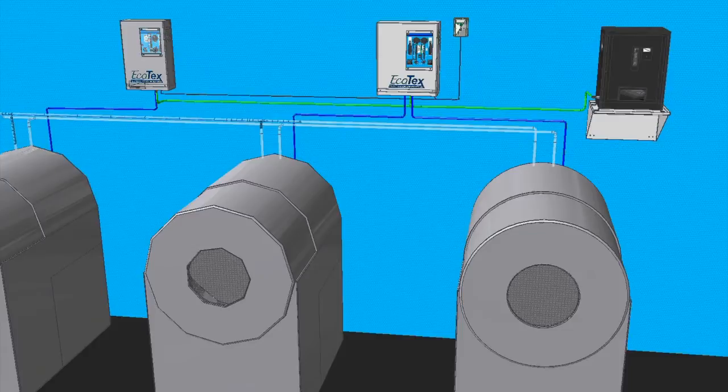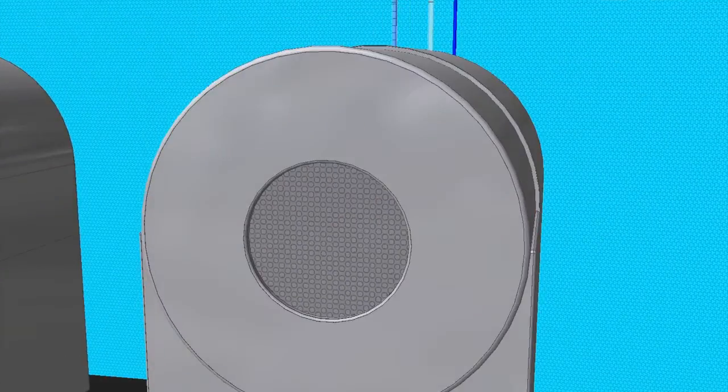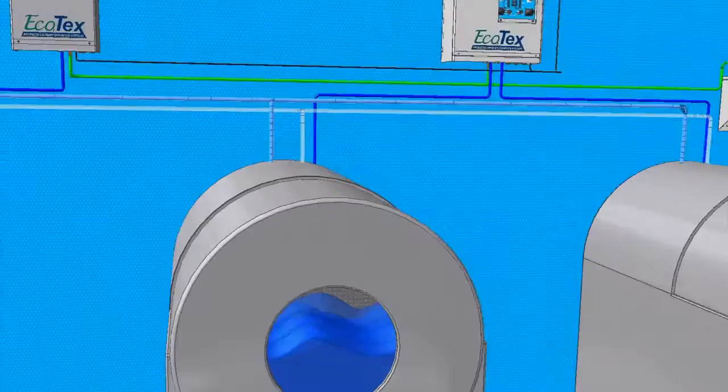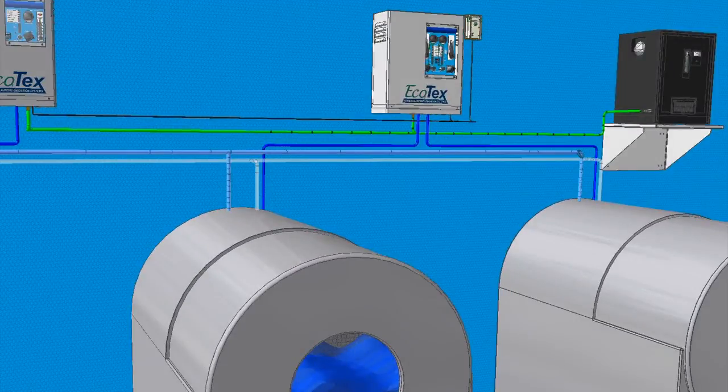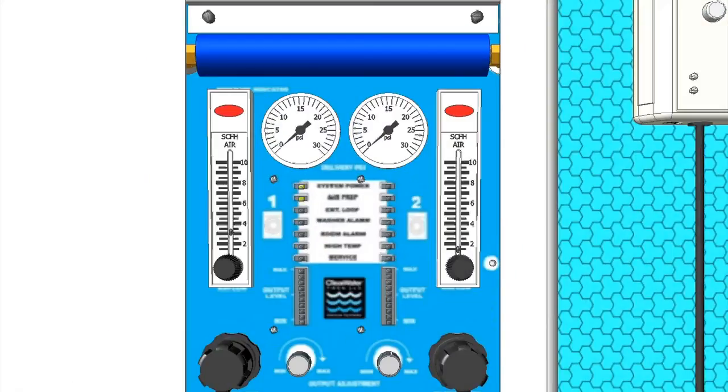As a new wash cycle begins, cold water fills the washer. The washer then sends an electrical signal to the Ecotex unit's laundry control board, letting the system's microprocessor know that ozone is needed. The Ecotex system then receives the signal and energizes the oxygen concentrator.